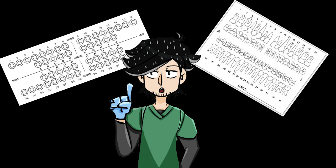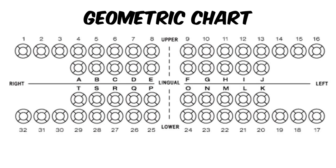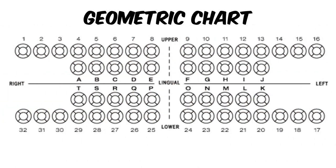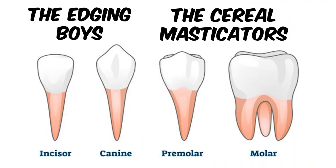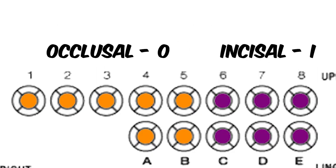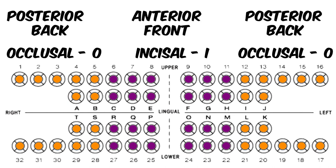To help with visualization, we typically use a charting system to keep track of which surface might need a restoration or have a condition that we need to fix. These charts are called the geometric chart and the anatomical chart. Today we're sticking with geometric for the shapes, but you can transfer the same material to any standard charting system. When dealing with surfaces, the most functional surface is that which slices, bites, and chews - our occlusal, the O-surface, and our incisal area, the I-surface. They occupy our center area of the charting circle, no matter if it's the top or the bottom teeth.